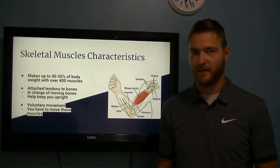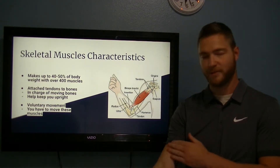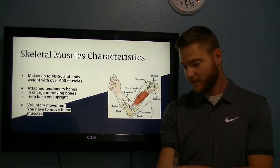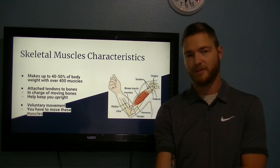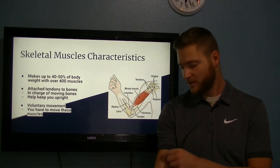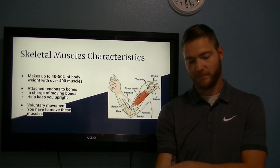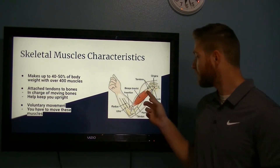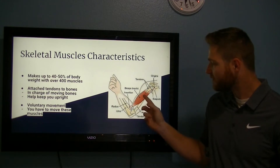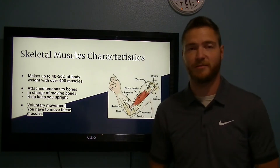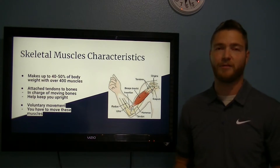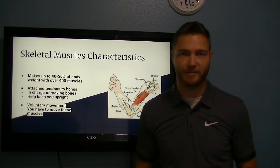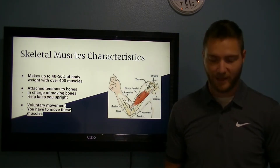To use a bicep muscle as an example, you have your bicep tendon connected at the bottom of your bicep, connected to your radius. In order to move this radius, you've got to move your tendon, and that's connected to your muscle and bone. Skeletal muscles are voluntary muscles, so you have to think about moving them before you move them.